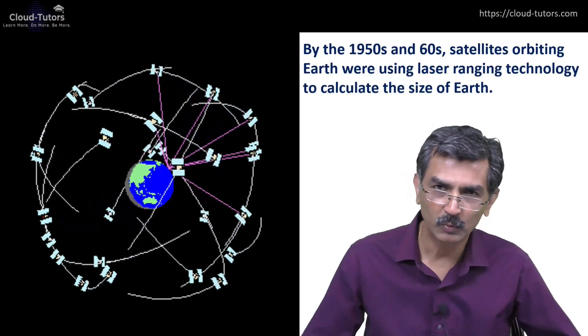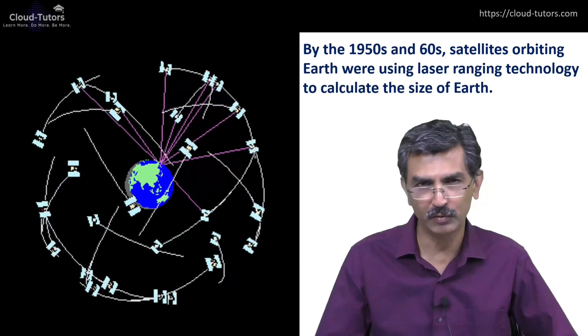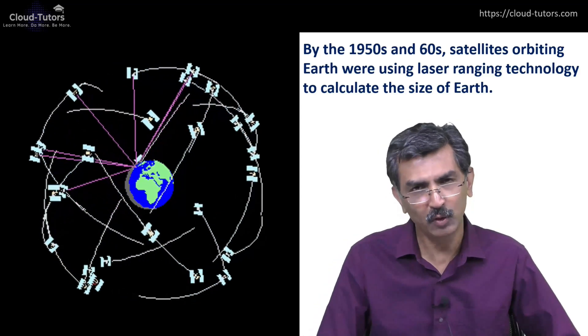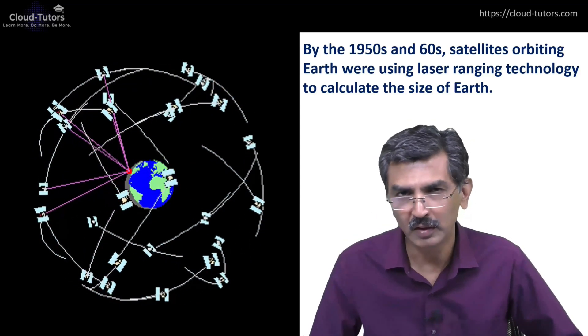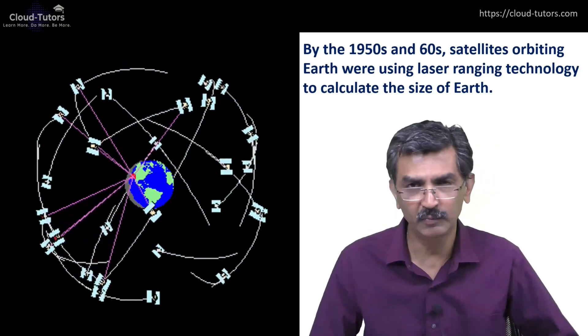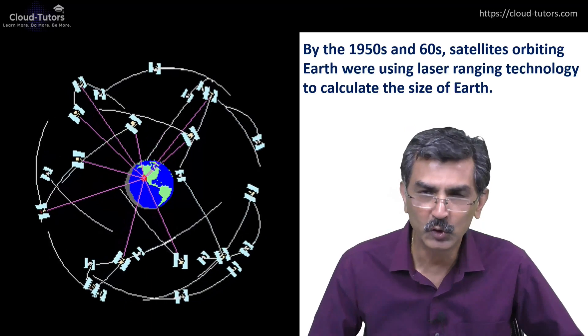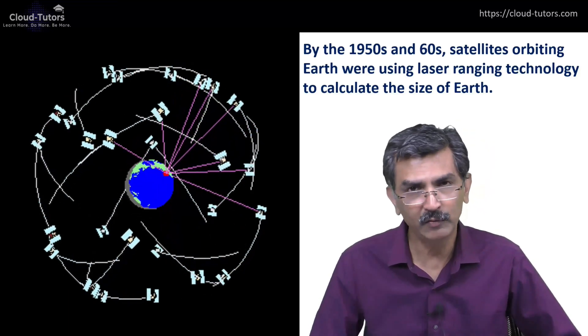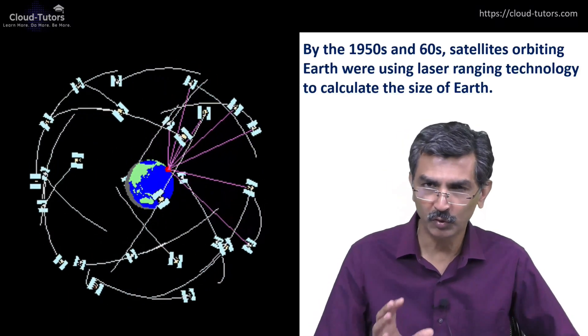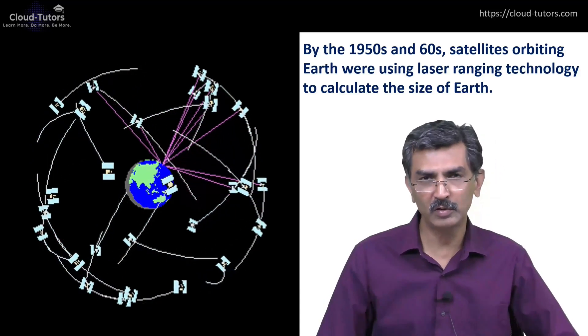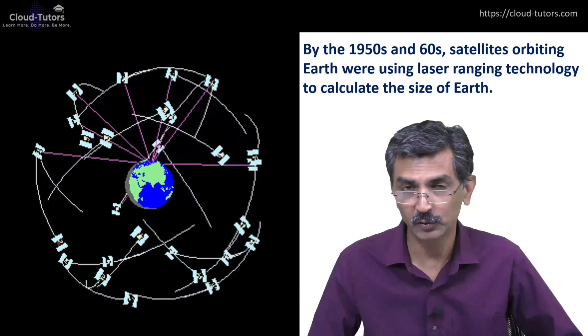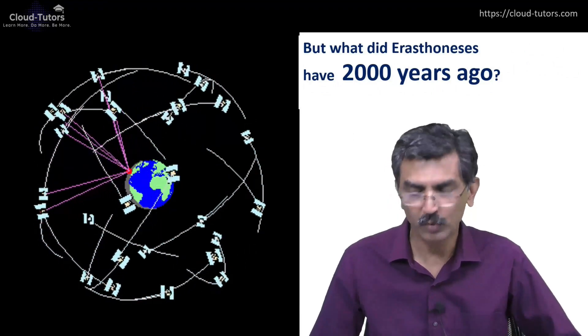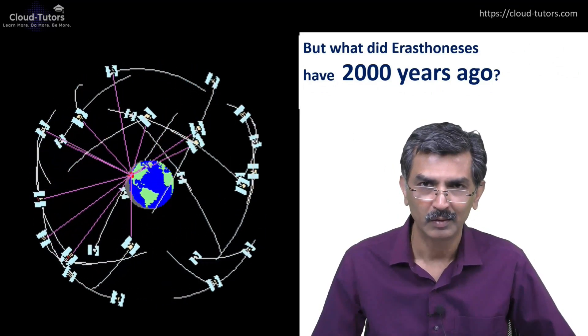Now if you look at how we have calculated the radius or circumference of Earth in modern times, you should know that technology has a lot to do with it. The extremely accurate understanding of Earth's circumference is because of the numerous satellites we have orbiting Earth. They have been orbiting since the 1950s and 60s, and they have used sophisticated laser ranging technology to determine the circumference of Earth.